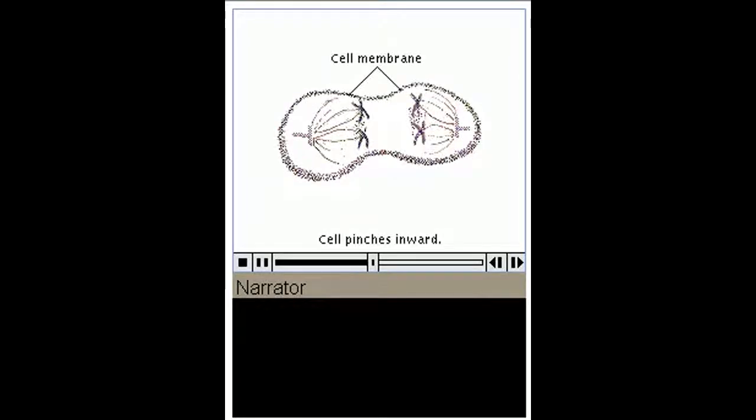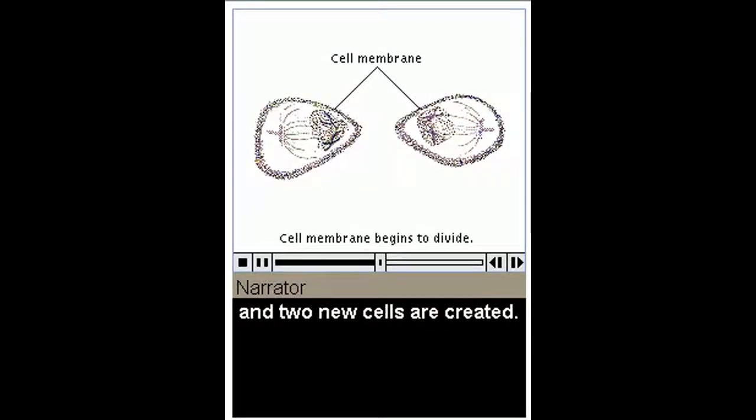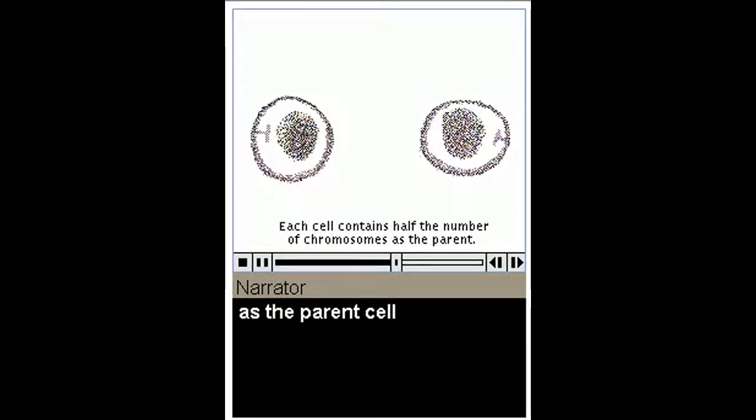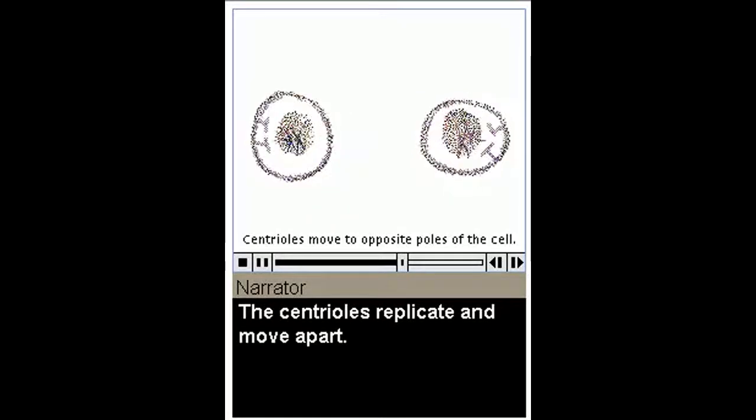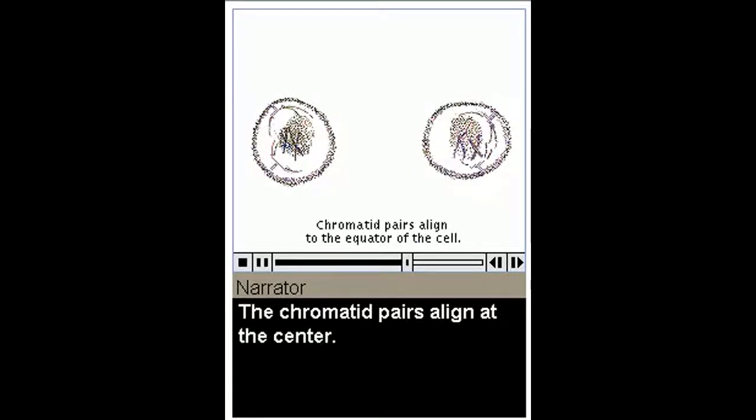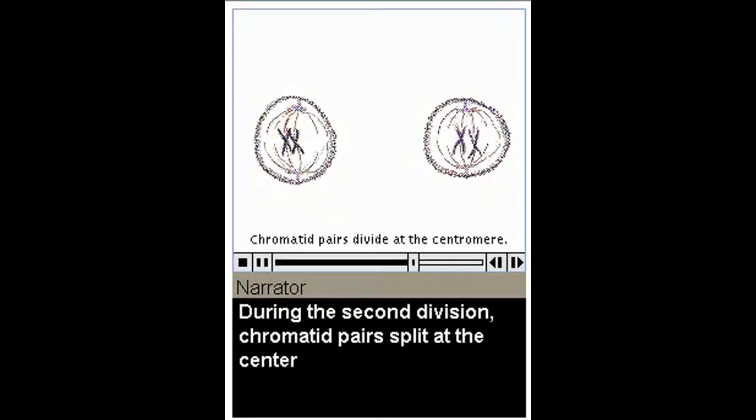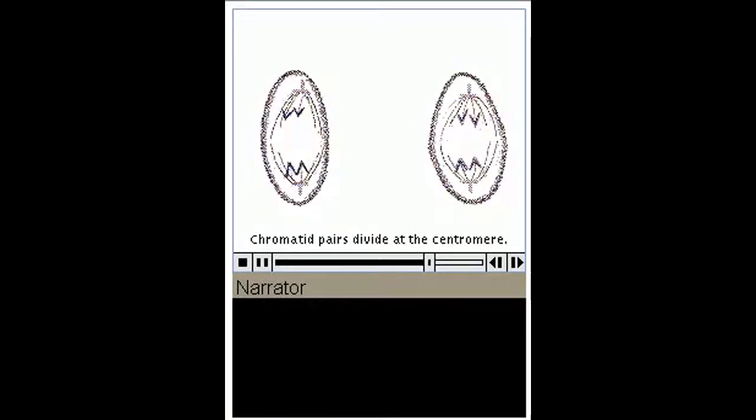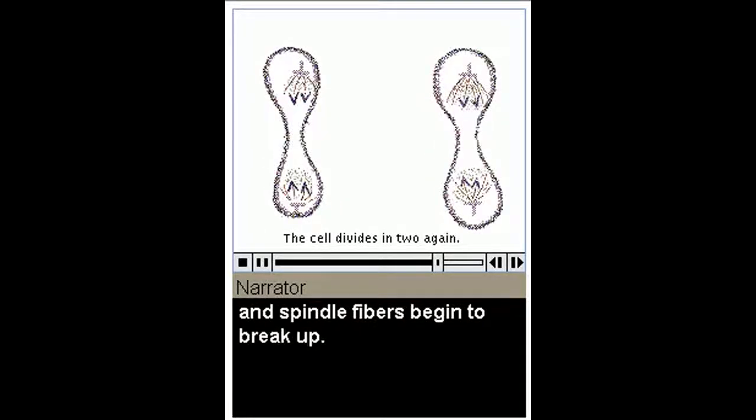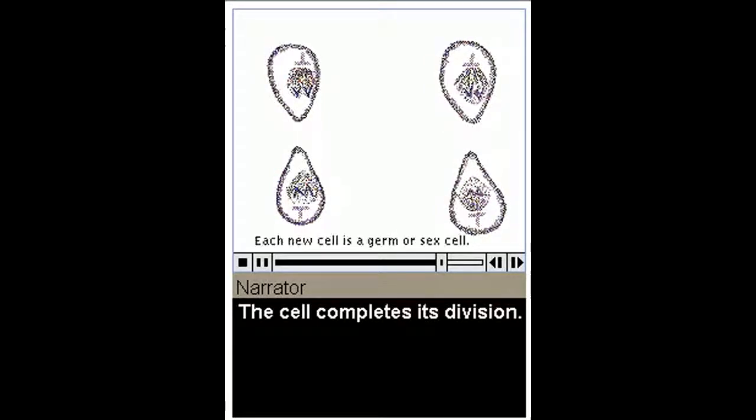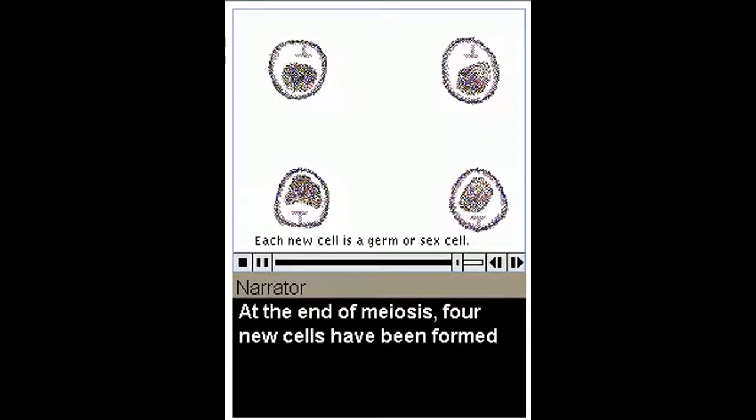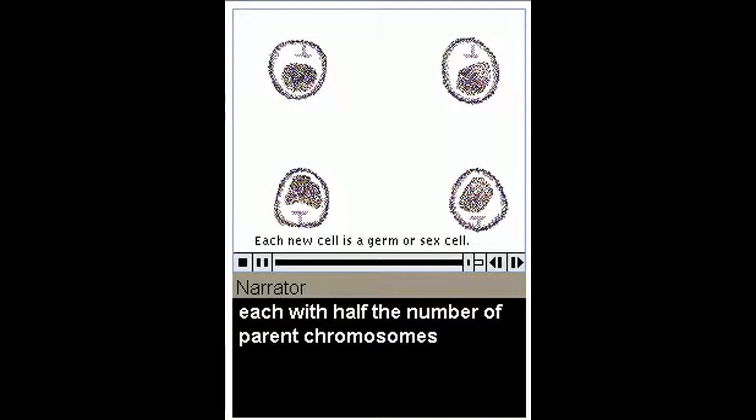The pairs pull apart and move along spindle fibers toward the two centrioles. The cell membrane pinches inward. The membrane forms around the new nuclei and two new cells are created. The new cells contain half the number of chromosomes as the parent cell, but each is double stranded. The centrioles replicate and move apart. The chromatid pairs align at the center. During the second division, chromatid pairs split at the center and move to opposite centrioles along spindle fibers. The cell membranes pinch inward and spindle fibers begin to break up. The cell completes its division. Chromosomes become less and less distinct and the nuclei form. At the end of meiosis, four new cells have been formed, each with half the number of parent chromosomes and each with a different combination of genetic information.